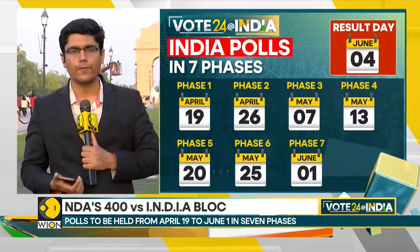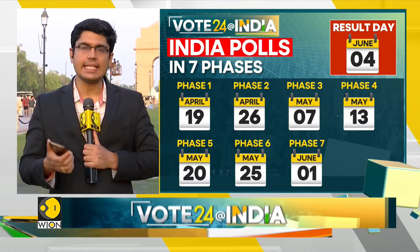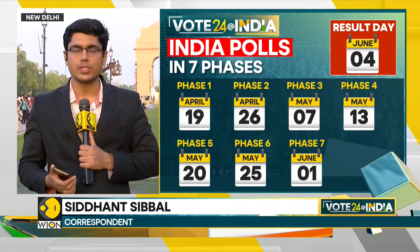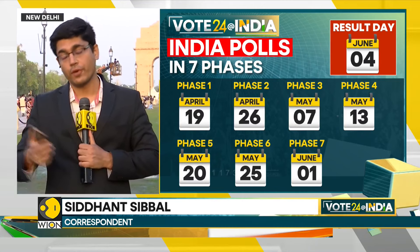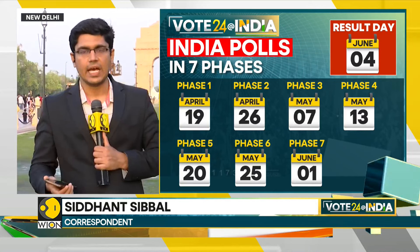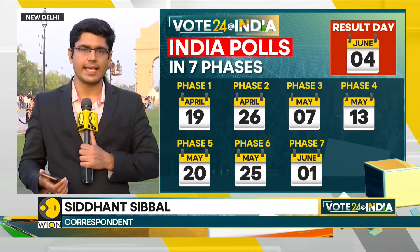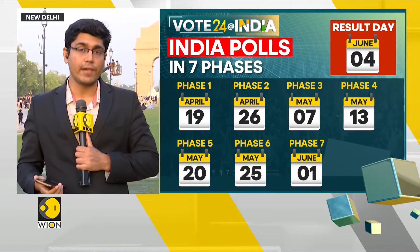India begins its two-month-long election cycle. The first day of voting is on the 19th of April, with results on the 4th of June. Essentially, seven phases where 97 crore eligible Indians will be going to the polls. There are 1.5 crore first-time voters, people between the age of 18 and 19. Roughly 55 lakh EVMs will be used in 10.5 lakh polling booths across the length and breadth of the country. It's a mammoth exercise.